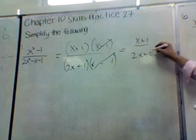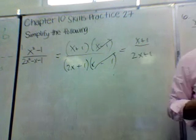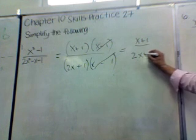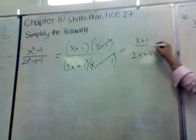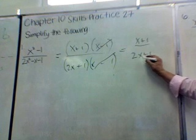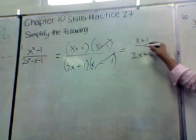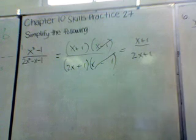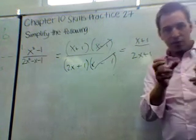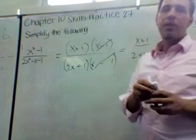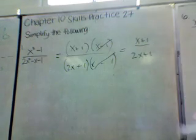Some people might be tempted at this stage to cancel the x, but you can't do that. If it were 2 times (x + 1) you could, but this is 2x + 1 — that's different. For you to be able to cancel, it has to be in brackets as a full term. So that's number one. We're going to move over and do number six from your Skills Practice Package, Skills Practice 27.